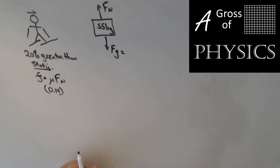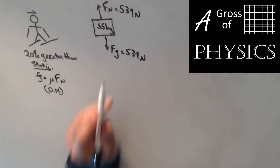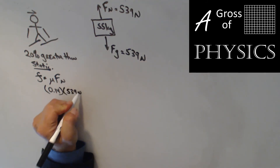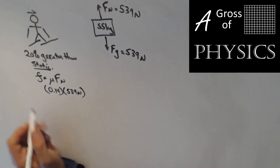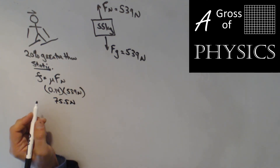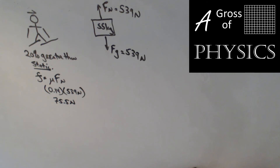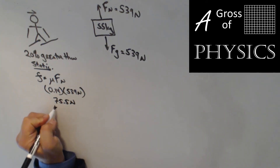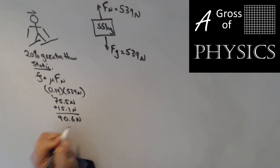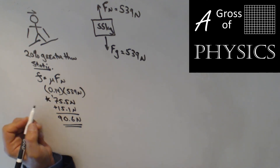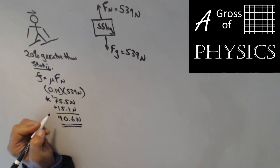To find the normal force: 55 kilograms times 9.8 equals 539 newtons, which is also the normal force. The maximum static friction is 0.14 times 539 equals 75.5 newtons. To apply 20% greater: 20% of 75.5 is 75.5 times 0.2 equals 15.1 newtons added to 75.5, giving an applied force of 90.6 newtons. Anything less than 75.5 newtons won't move the skier at all, so the skier applies 90.6 newtons to ensure a good start.